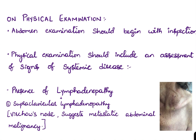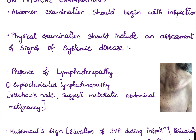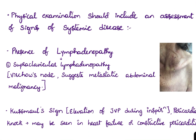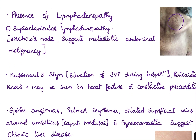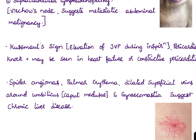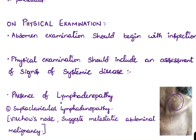On inspection, look for scars and the position of the umbilicus — whether it is pushed upward or downward — as well as skin and color changes. Physical examination should include assessment of signs of systemic disease, including lymphadenopathy. Specifically, left supraclavicular lymphadenopathy — Virchow's node — suggests metastatic abdominal malignancy. Inspection should always be done standing on the right side of the patient.